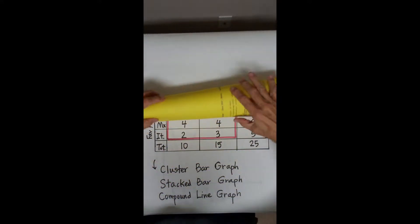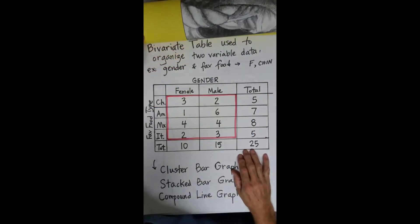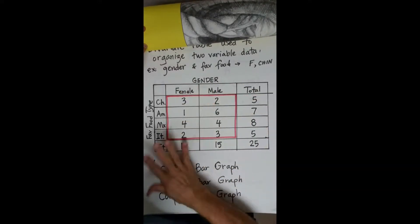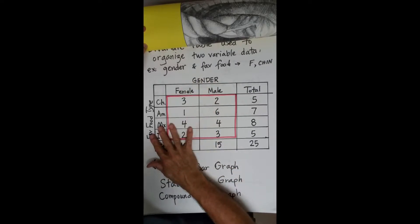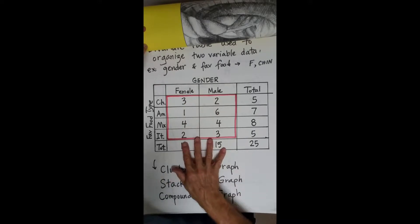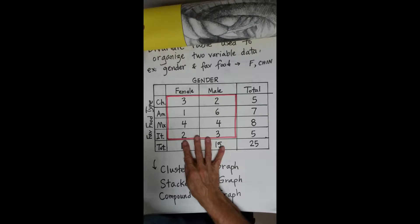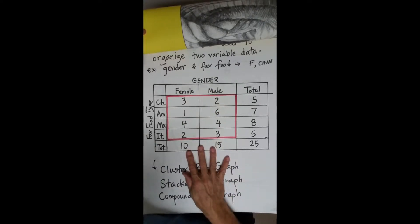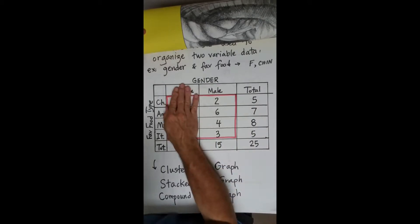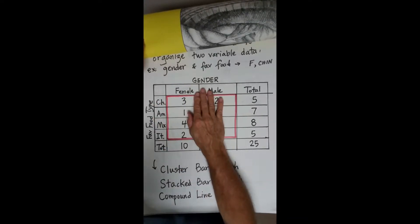We've drawn a bivariate table for gender and favorite food type, based upon 25 people who visited your house and told you their favorite food as they left. The question is: is there a difference between males and females relative to what they like to eat? This would be important to know — for example, if you had a party of just females or just males, which foods would you not serve? We're going to use this information to draw three different kinds of graphs to help visualize what's happening.